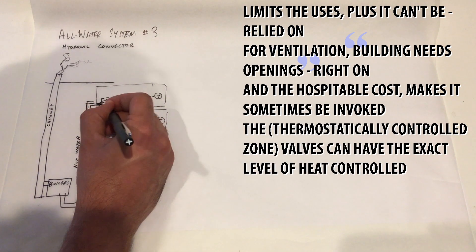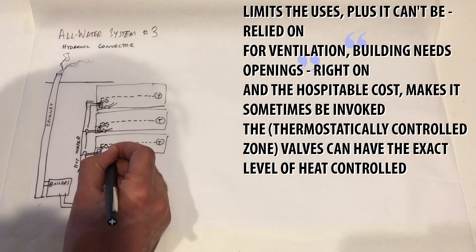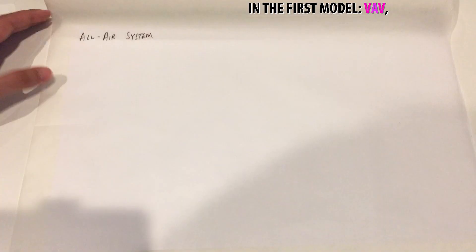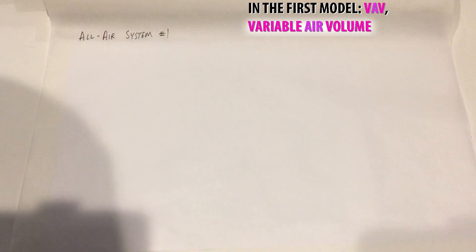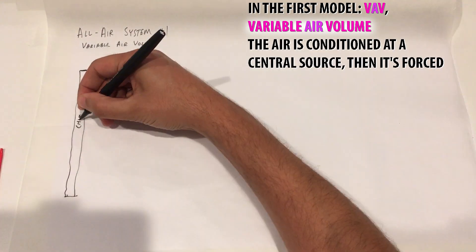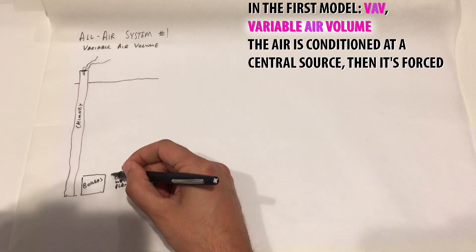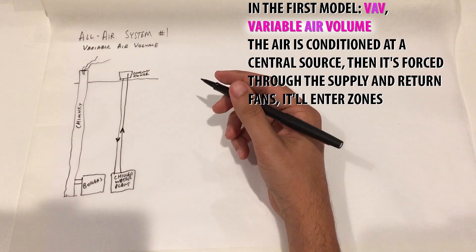Now let's discuss all-air systems, where central fans circulate conditioned air. Ductwork runs bring the air throughout the building. The first model is VAV — Variable Air Volume. The air is conditioned at a central source, then forced through supply and return fans.